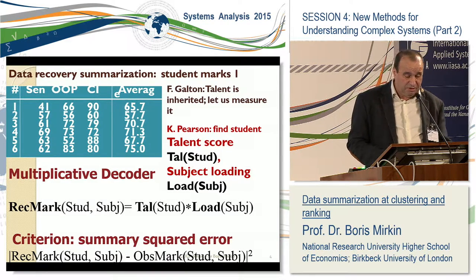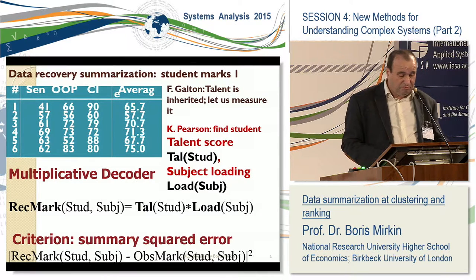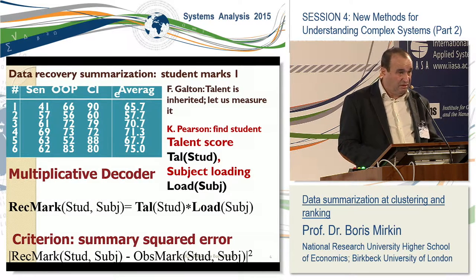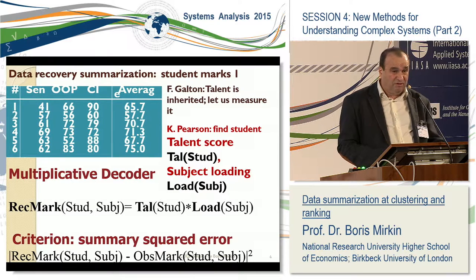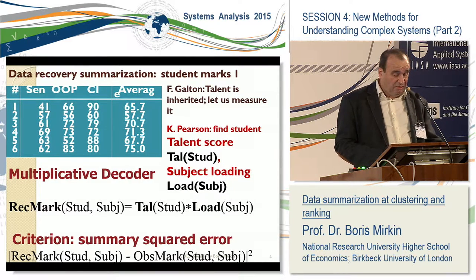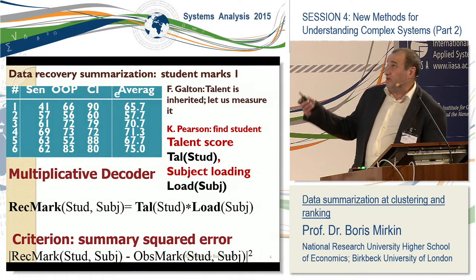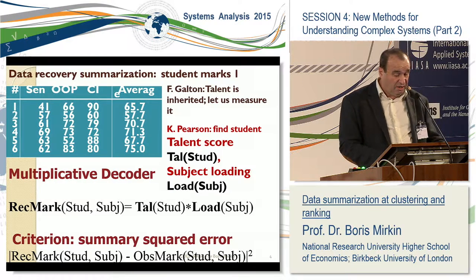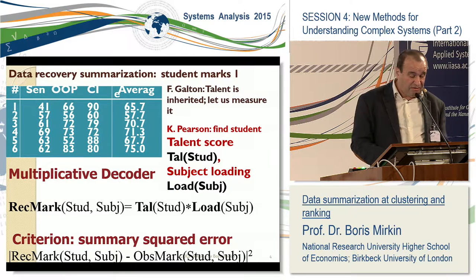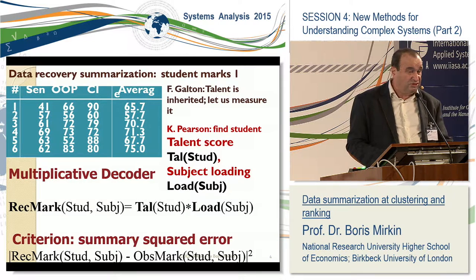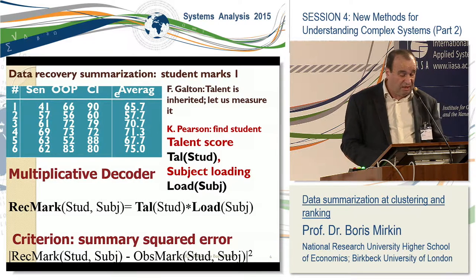He wanted to prove that talent is inherited. But to prove it, he needed first to measure it. How can we measure? Well, people typically take the average. So a student gets 75 as the average, meaning his talent, according to this data, is greater than the talent of the first one, who scored 65.